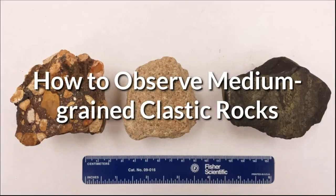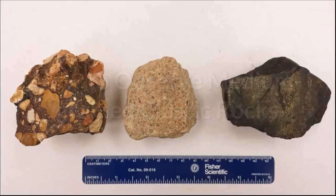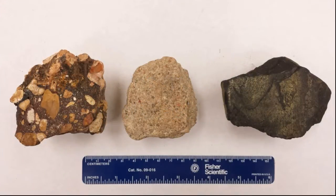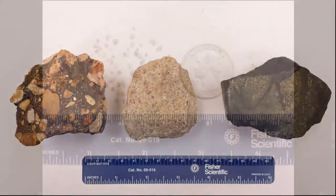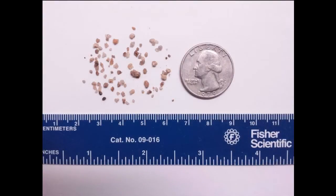The clastic sedimentary rocks are composed of weathered particles from microscopic clay to boulders. These rocks are identified by the sizes of their grains. By definition, the sizes of sand particles are between two millimeters and the smallest grains we can see without magnification.